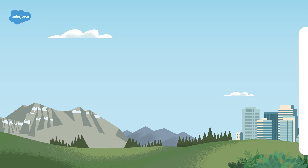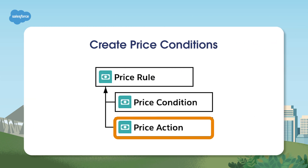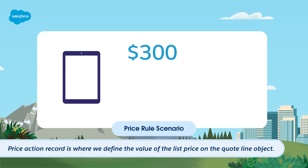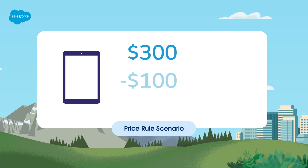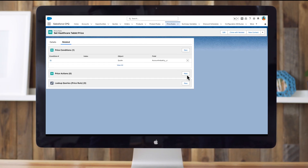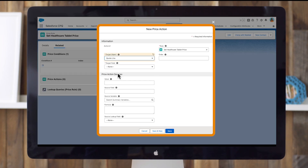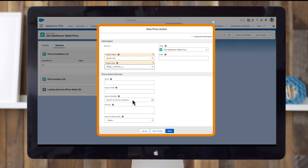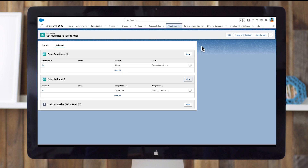Awesome! Now let's move on to the second to last step: creating a price action record. The price action record is where we define the value of the list price on the quote line object you want to change. In this case, we'll update it from $300 to $200 to reflect the discount that healthcare workers receive. In the price actions related list, click new. For the target object, select quote line. For the target field, select our list price field. For value, enter $200. Click save.